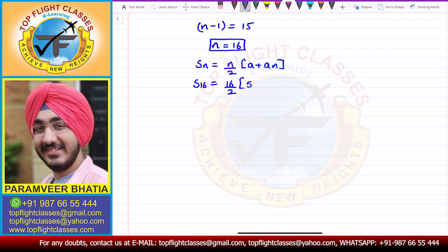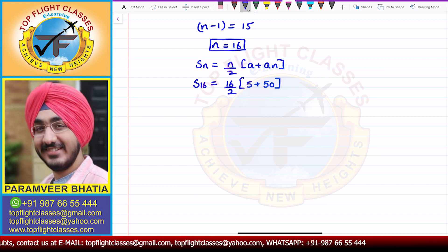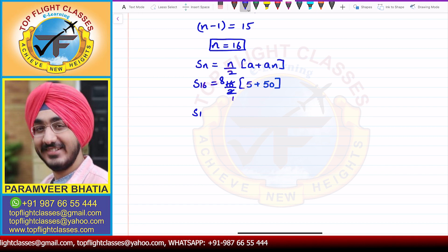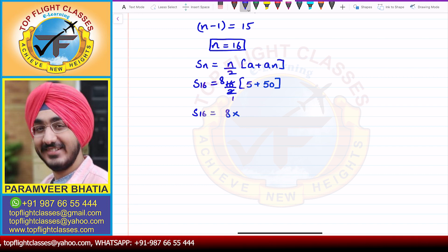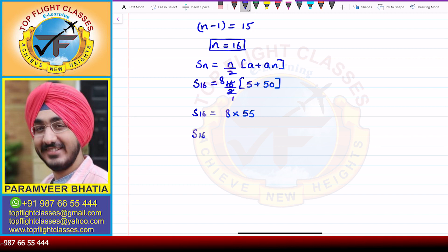A is 5 plus An, that is 50. So 16 divided by 2 is 8. When I solve this, I get S16 is equal to 8 times 50 plus 5, that is 55. So 8 into 55: 8 into 5 is 40 plus 4 is 44, giving S16 equal to 440.